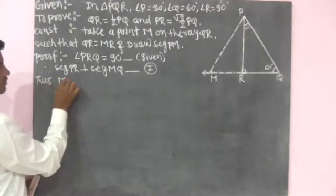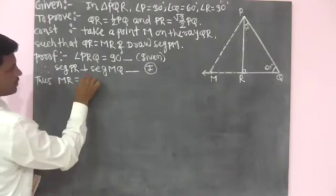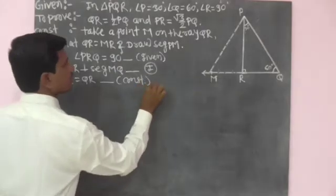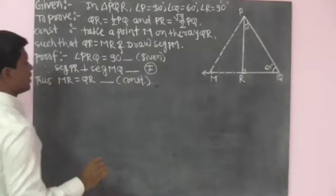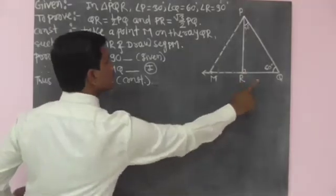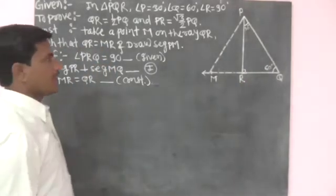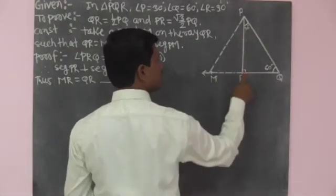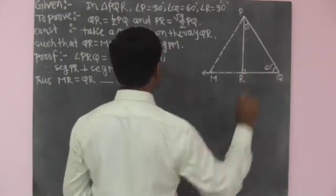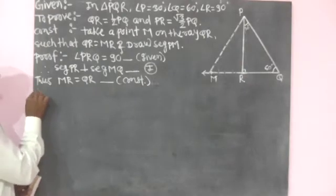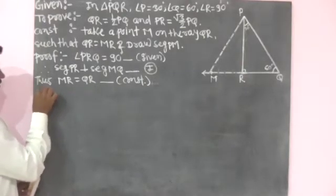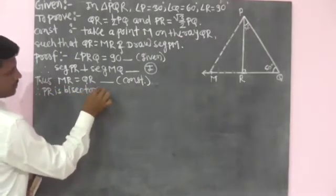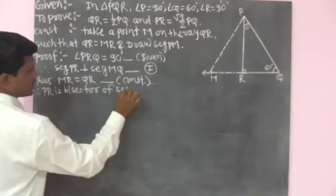Second: MR is equal to QR by construction, which means R is the midpoint of segment MQ. Another meaning of MR equal to QR is that segment PR is the bisector of segment MQ. Therefore PR is the bisector of segment MQ. That is equation number 2.